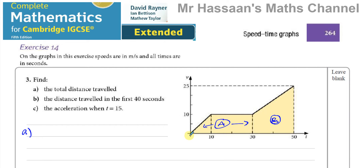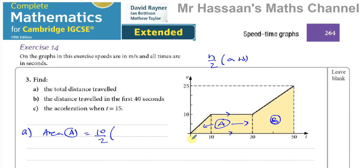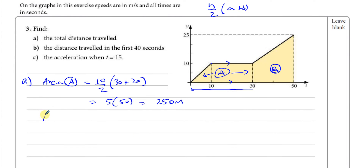The area of a trapezium is h over 2 times the sum of the parallel sides (a + b). For trapezium A, the distance between the parallel sides h is 10, so the area is 10 divided by 2 times the sum of the parallel sides, which is 30 plus 20 = 50. That gives 5 times 50, which is 250 meters — the distance traveled in the first 30 seconds.